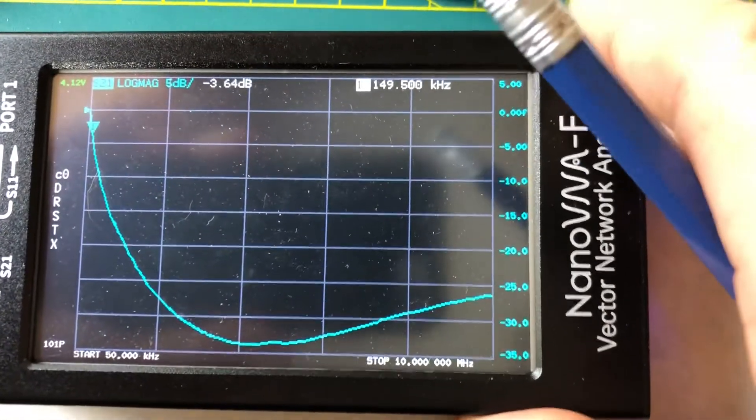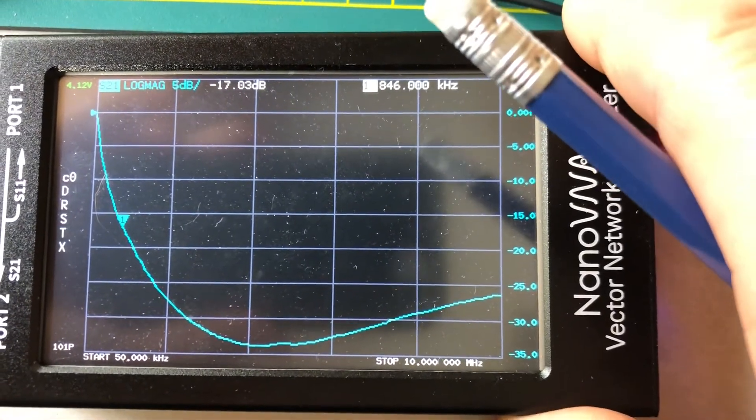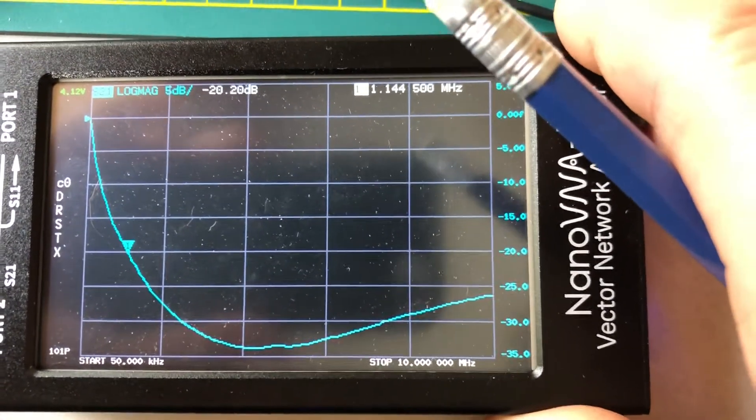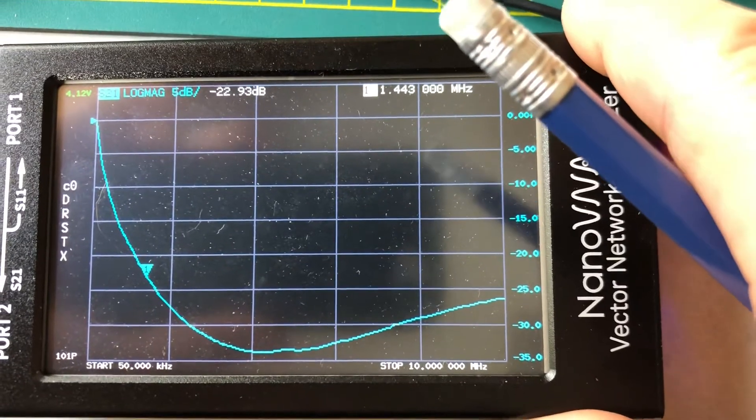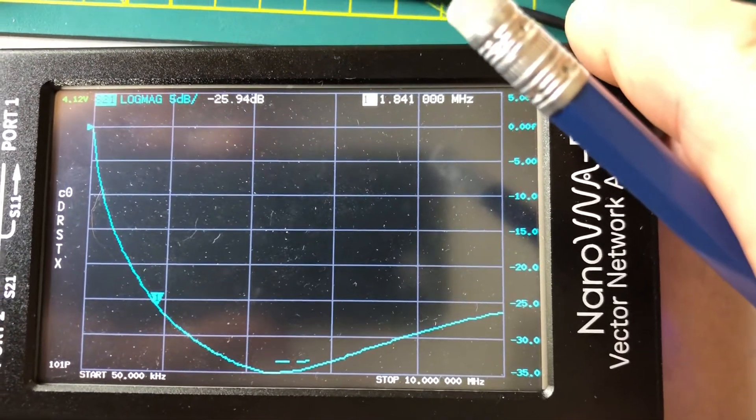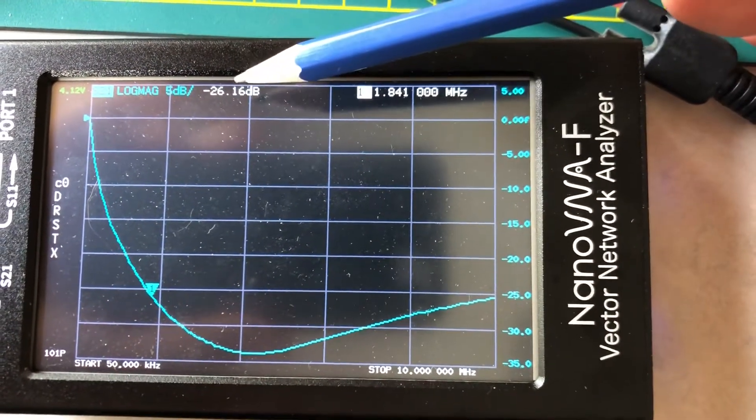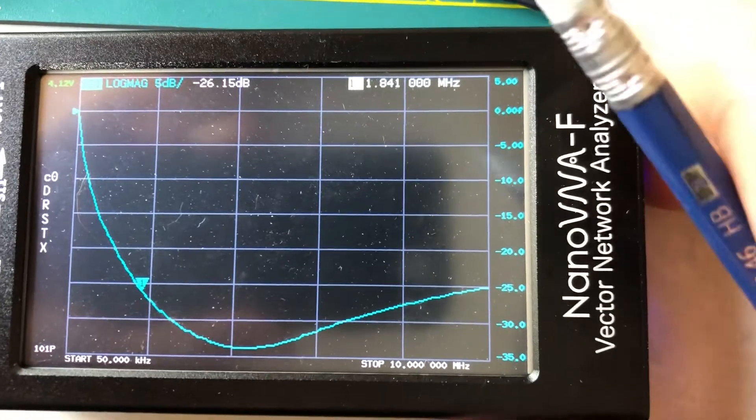But now if we come up in frequency, you can see that the inductive reactance starts to increase, which causes my common mode rejection ratio to increase. And I'm looking for, yeah, 1.8. Okay, so there's 160 meters. And I've got 26 dB common mode rejection ratio.